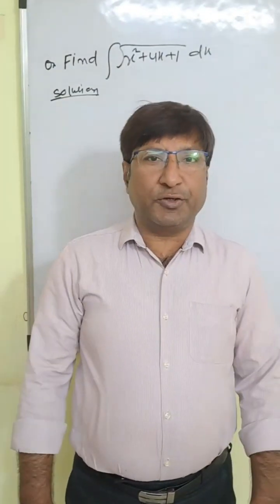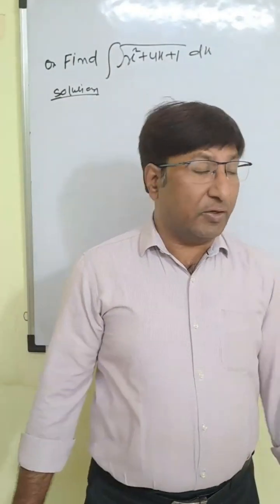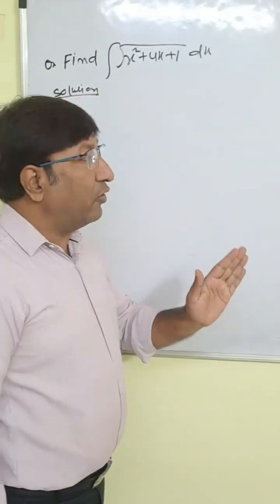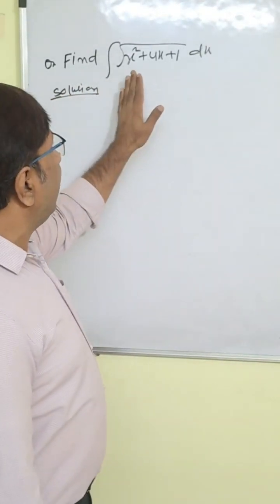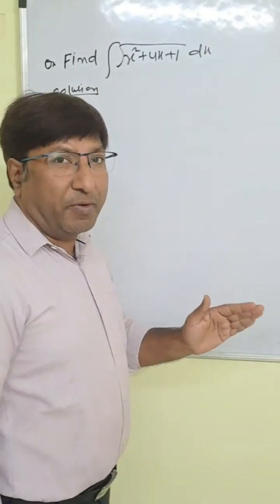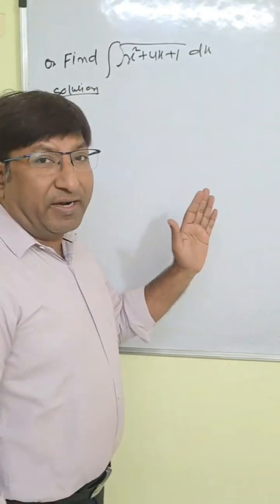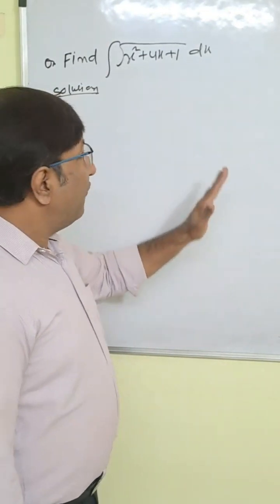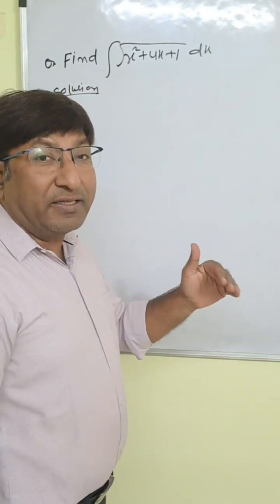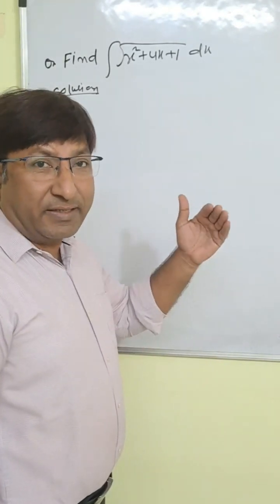Most important question of integration. Find integration of root under x square plus 4x plus 1 dx. For this type of question the simple trick is: first you change this expression as x square plus a square or x square minus a square form.